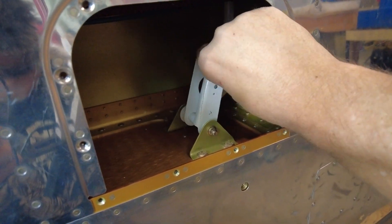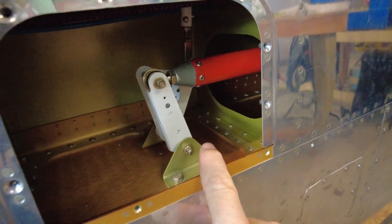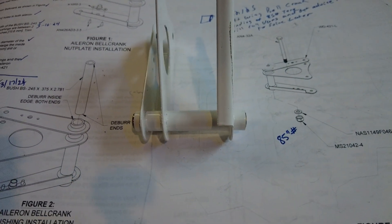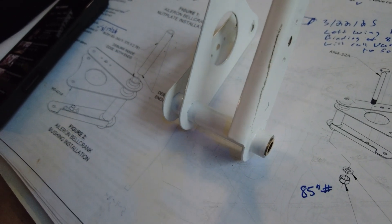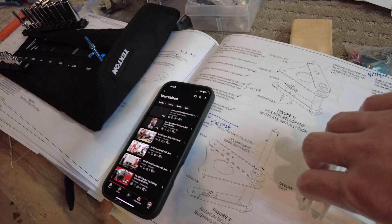First thing we did was call Vans Tech Support and talk to our good friend Kevin, who guided us through the process. The first thing to check is the brass bushing that goes through the pivot point. If that's not sized correctly, then we're putting too much pressure on the bell crank with the bolt and not allowing the brass tube to be what's captured.